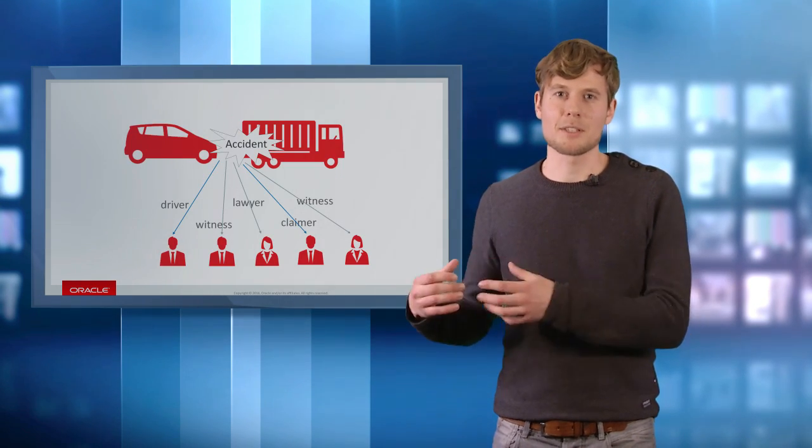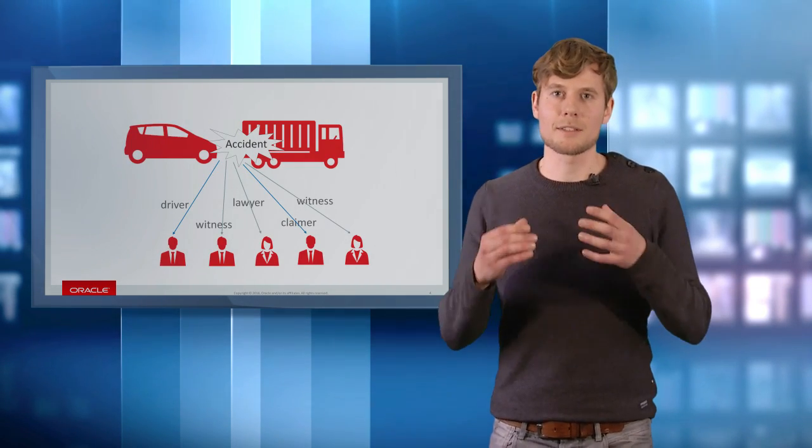Let's take a look at car insurance fraud. A car insurance claim is easily represented as a graph. The claim is a node, and the driver, the witnesses, the lawyers, and the passengers are all nodes connected to the claim.